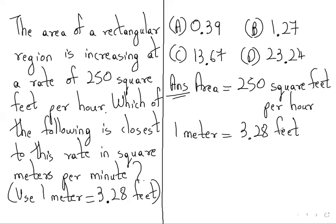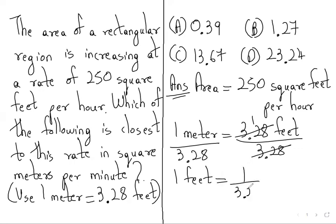1 meter equals 3.28 feet. To convert feet to meters, divide by 3.28 on both sides, so 1 foot equals 1 over 3.28 meters.